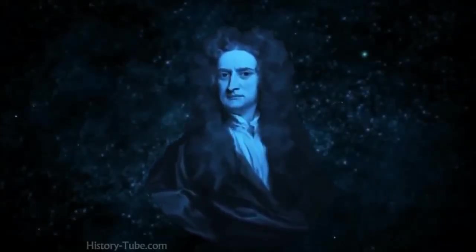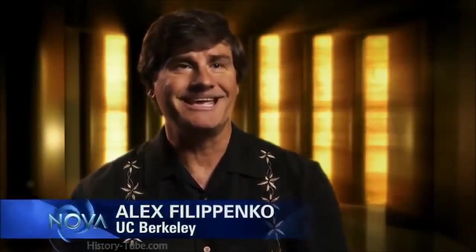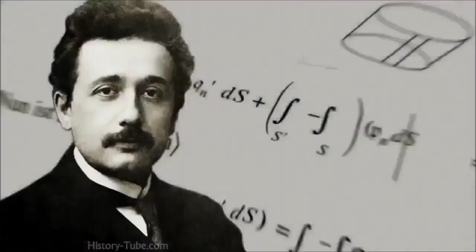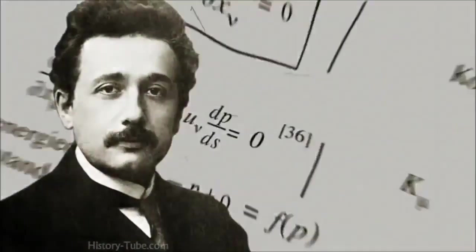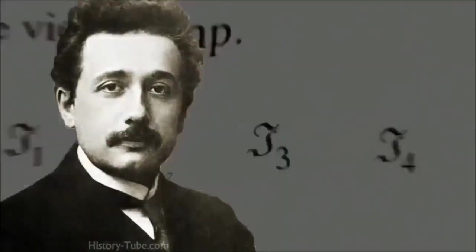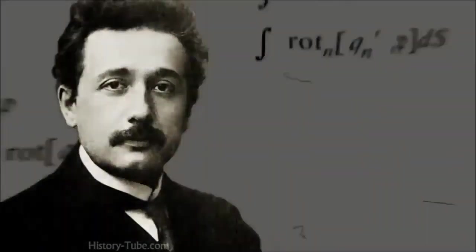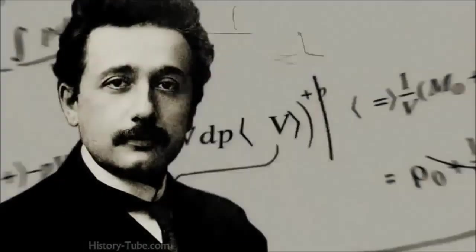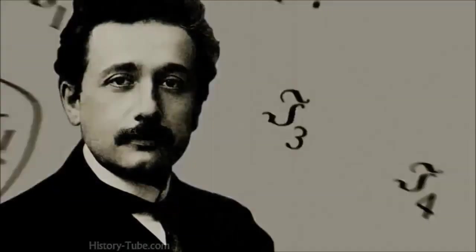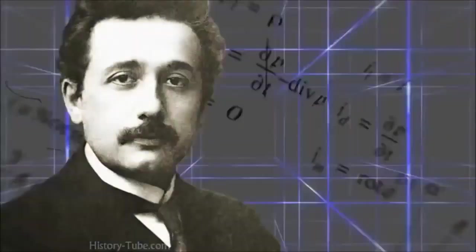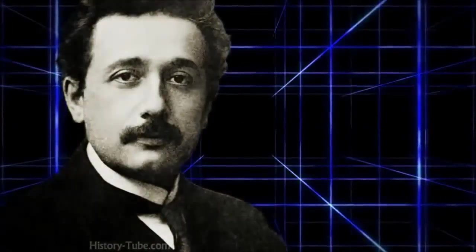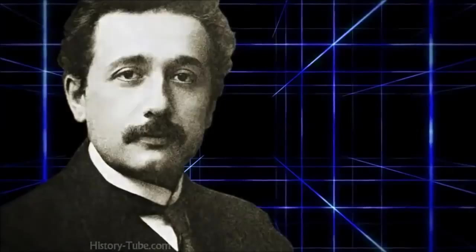Einstein found that no band-aid patches would fix Newtonian gravity. He had to invent a mechanism for it. He had to understand it. After puzzling over this problem for more than 10 years, Einstein reached a startling conclusion. The secret to gravity lay in the nature of space-time. It was even more flexible than he had previously realized. It could stretch like an actual fabric.